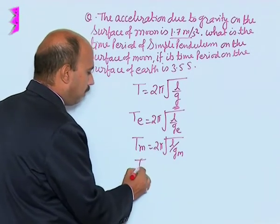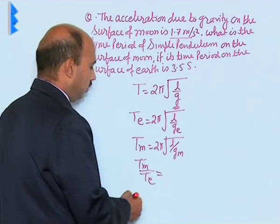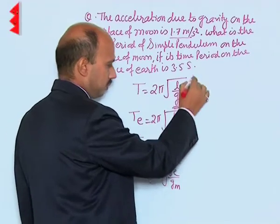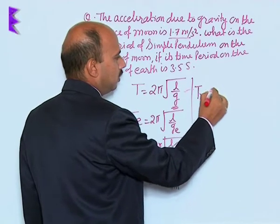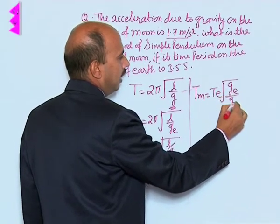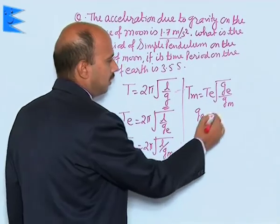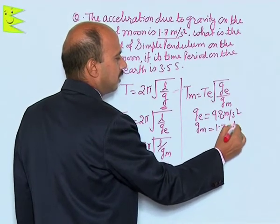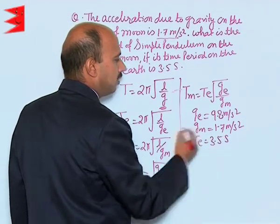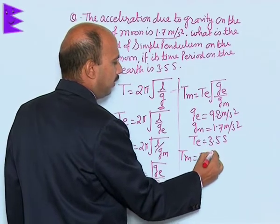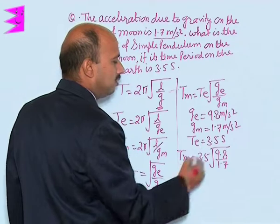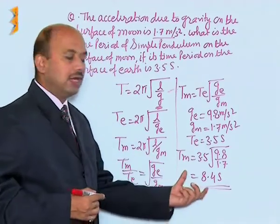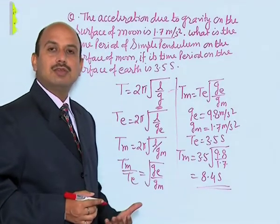We can write T_m / T_e = √(g_e / g_m). Here g_e = 9.8 m/s² and g_m = 1.7 m/s², and T_e = 3.5 seconds. So T_m = 3.5 × √(9.8 / 1.7), which on solving gives 8.4 seconds. The time period on the surface of the moon is 8.4 seconds, which has increased because the acceleration due to gravity has decreased.